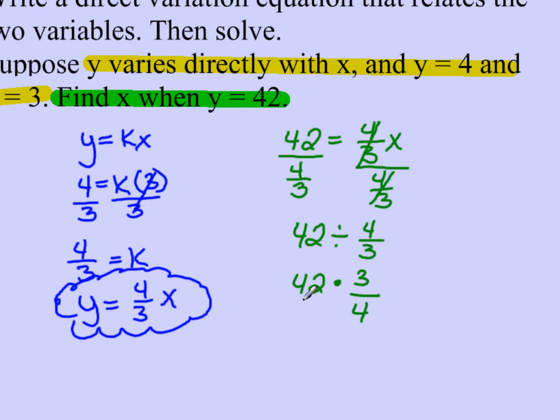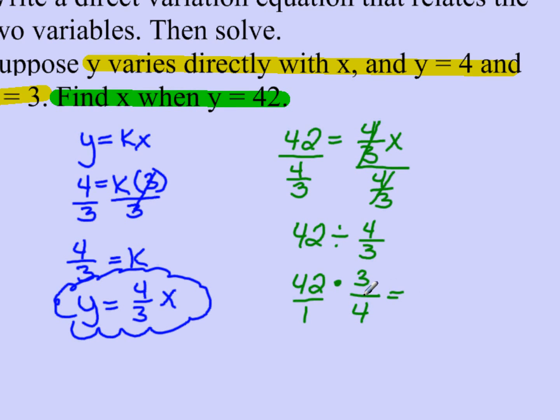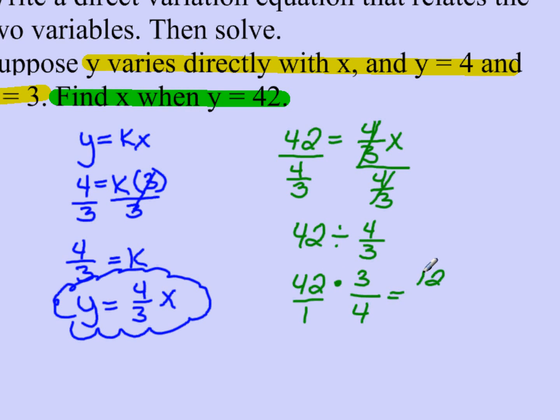If I need to, I can put a 1 under the 42. And when I multiply, I multiply straight across. So it's 42 times 3, which is 126, over 1 times 4, which is 4.